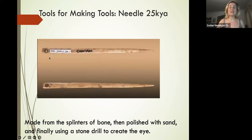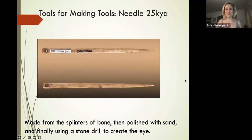Through the hole you can pull thread—which could have been anything from dried animal tendon to plant material. So Homo sapiens are making clothes, and perhaps doing surgical techniques as well, though we aren't sure.